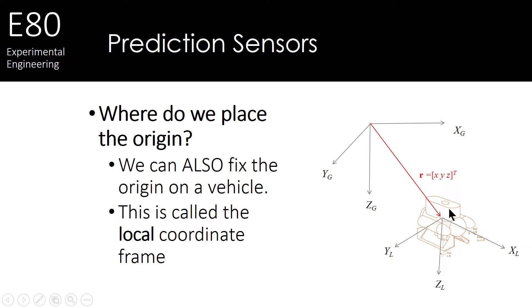However, we can also place a second coordinate frame right on the vehicle itself. In this case, you see that the X coordinate is aligned with the forward direction of the robot. Z is down, and Y is in the lateral direction with respect to the robot. But again, we've got a global frame attached to the Earth and a local frame attached to the robot.